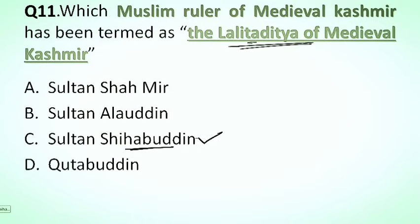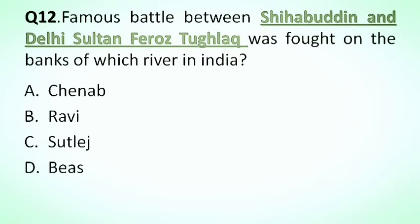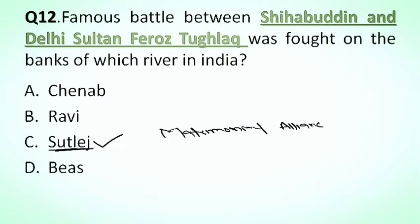Next question is: the famous battle between Shihabuddin and Delhi Sultan Feroz Shah Tughlaq was fought on the banks of which river? Options: A. Chenab, B. Ravi, C. Sutlej, D. Beas. The correct answer is option C, Sutlej. This battle was fought on the banks of the Sutlej river. And there was also a matrimonial alliance between Shihabuddin and Feroz Shah Tughlaq.